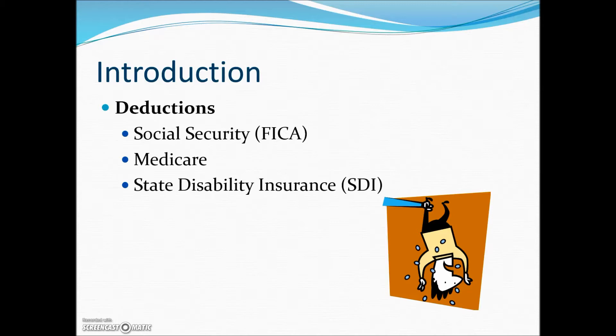Other deductions may include state disability insurance, union dues, retirement, vacation pay, credit union savings or loan payments, purchasing of bonds, uniform expenses, group insurance plans, and charitable contributions.